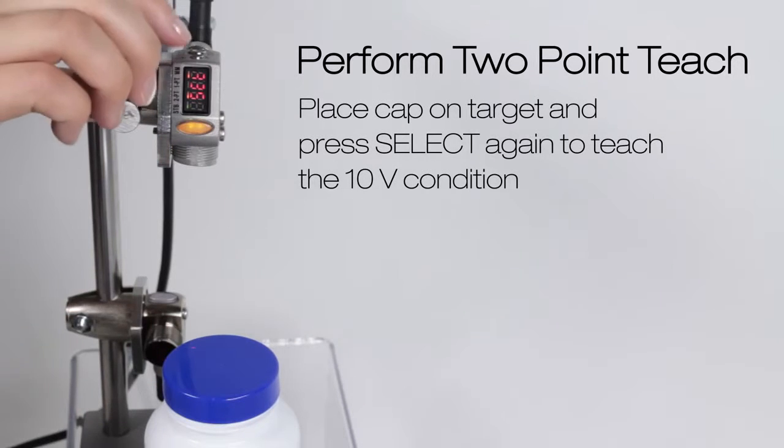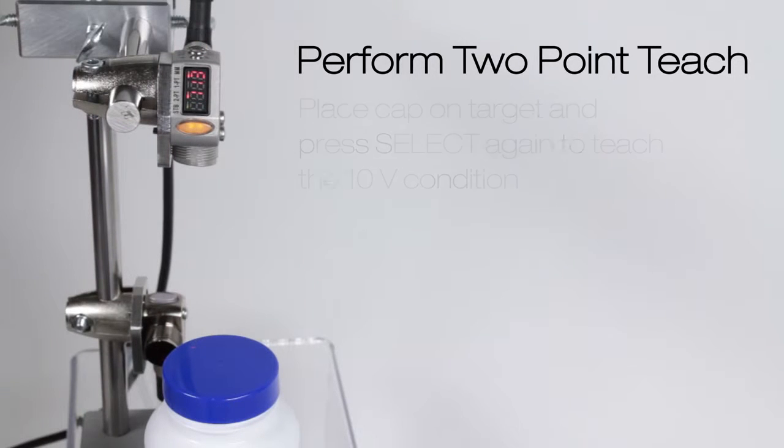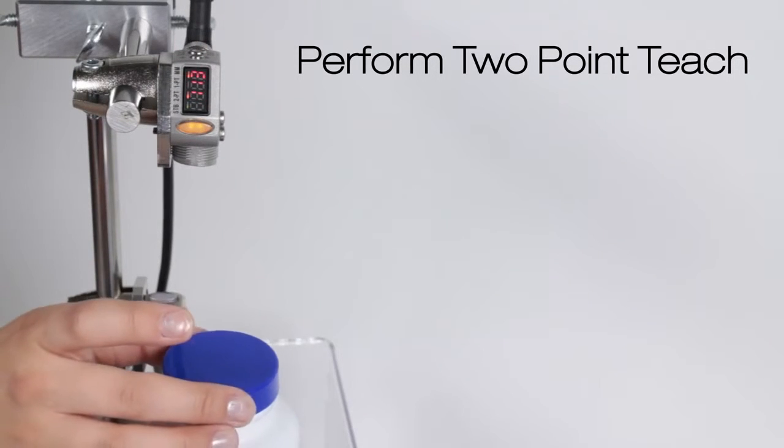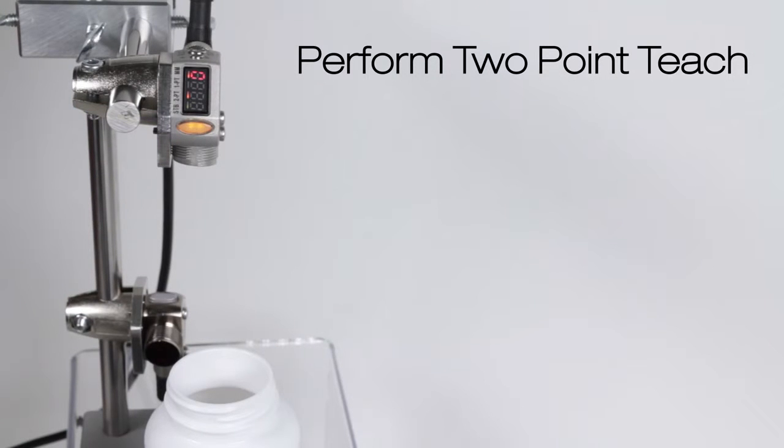Set 10-volt flashes, place the lid on the target, and teach the 10-volt setting by pressing select again. A distance flash is on the display indicating the location of the 10-volt setting.